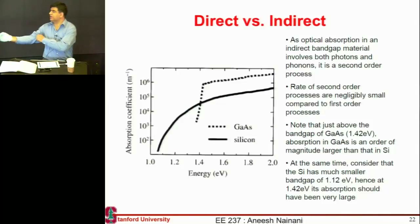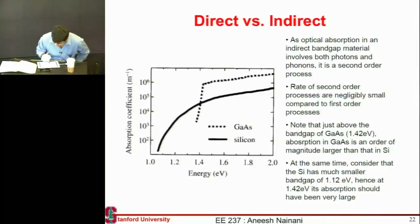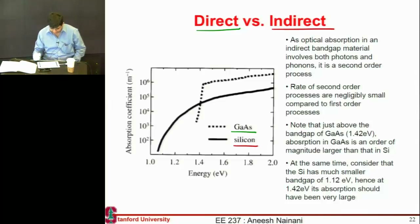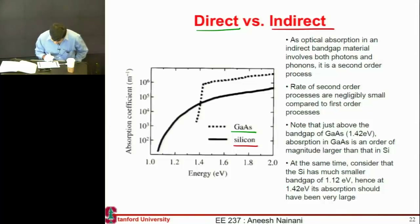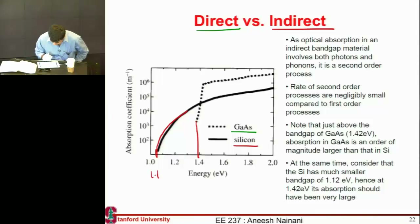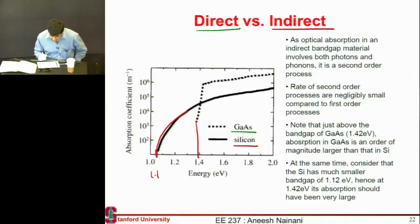Here I'm comparing two materials: gallium arsenide, which is a direct band gap material, and silicon, which is an indirect band gap material. Silicon has a band gap of 1.1 eV, so its absorption coefficient starts rising from there. Gallium arsenide has a band gap of approximately 1.4 eV, so its absorption coefficient starts from that energy level.